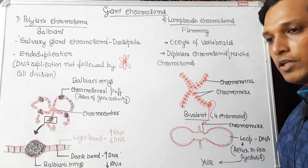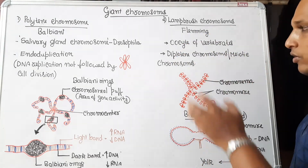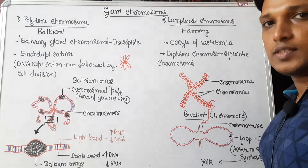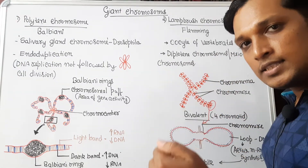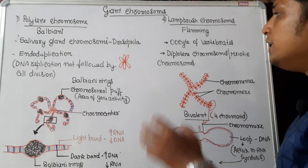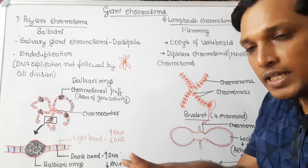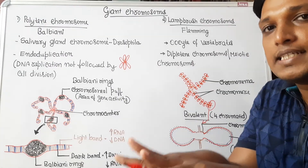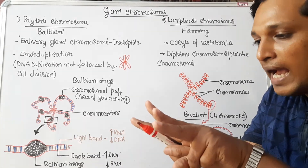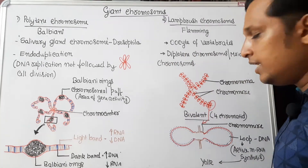Why the name diplotene chromosome? The oocyte undergoes meiotic division, during which it enters prophase I of meiosis. In prophase I, there is a stage called the diplotene stage, where you will observe this lampbrush chromosome. In the diplotene stage, you will find bivalents — two homologous chromosomes attached to each other — and in that stage lampbrush chromosomes are seen.